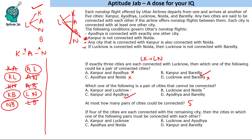So the maximum we can have is 5 connections. We cannot have more than this because connections involving Ayodhya with anyone other than Lucknow are eliminated, Lucknow-Bareilly cannot be connected in this scenario, and Kanpur-Noida is given as not connected. So we are left with exactly 5 maximum connections.